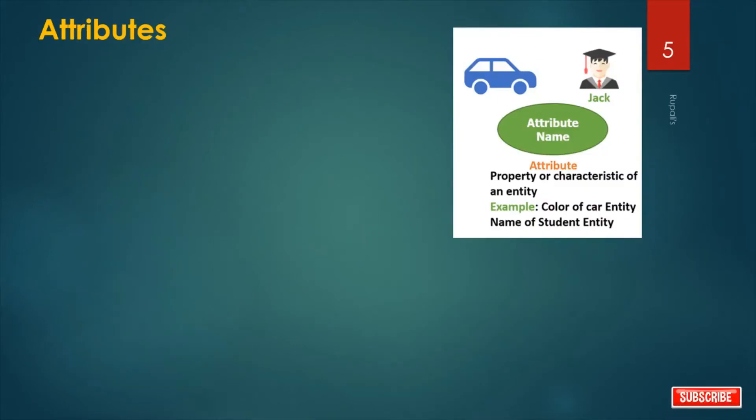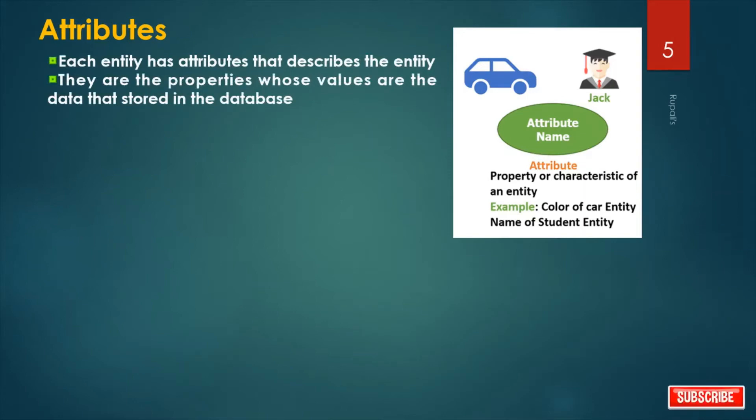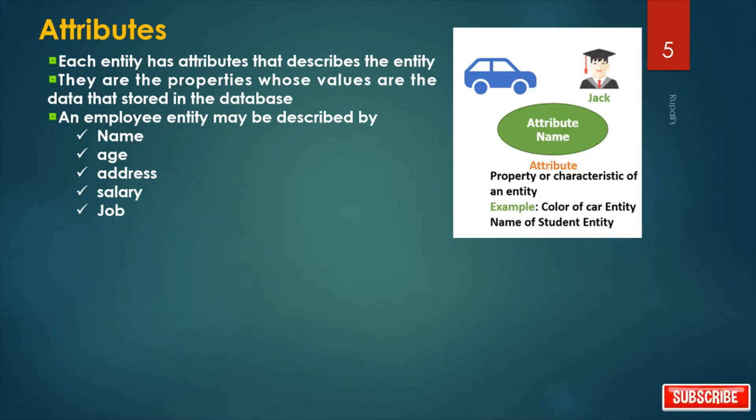Attributes. Property or characteristic of an entity. For car entity, color is the attribute. For student entity, name is attribute. So each entity has attributes that describes the entity. They are the properties whose values are the data that stored in the database. So for employee entity, name, age, address, salary, job, these are the attributes for employee entity.